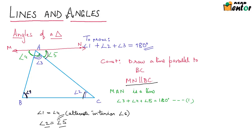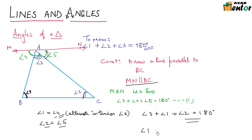What I will do is replace angle 4 and angle 5 in condition 1 by angle 1 and angle 2 respectively. If you look carefully at what we have and rearrange it, we get angle 1 plus angle 2 plus angle 3 equal to 180 degrees. This is the exact condition we were supposed to prove — the sum of three angles of a triangle is 180 degrees. It's a very simple and elegant proof.